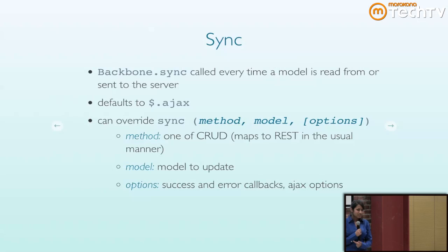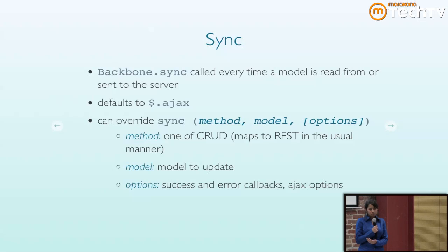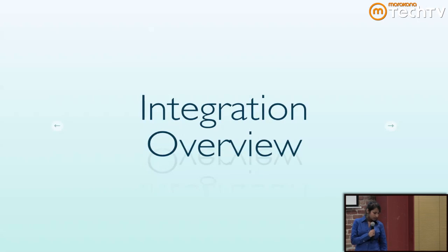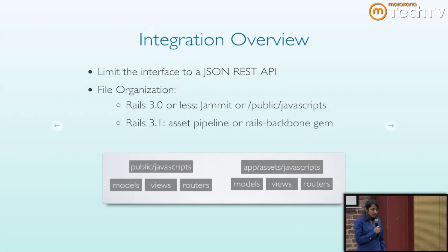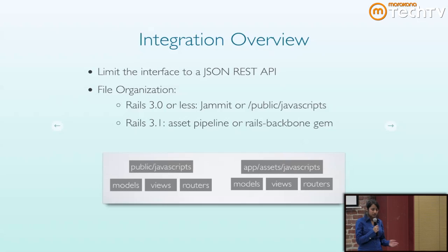There's a lot of information in these slides. I didn't mean to cover everything since it's a 15-minute talk, but they're available online — and since I heard you like JavaScript, this talk is written in JavaScript. For an overview of Rails integration: the interface is limited to a JSON REST API, so if you've got that already in your app, you're pretty much set to go. For file organization, instead of sticking everything into application.js, you can spread it out across folders, and the asset pipeline or your pre-Rails 3.0 public JavaScripts folder will serve it up.